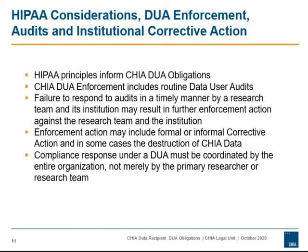Such action may include, but is not limited to, requests for additional protective measures, requests for formal corrective action plans and/or root cause analyses, and in some instances, the destruction of CHIA data and prohibition of further use or release. When violations of the CHIA data use agreement are known or suspected, CHIA may involve the institution's research administration or executive personnel. As CHIA releases data to and maintains its data use agreement with the institution, it seeks compliance by the entire institution and not merely with specific research teams or individuals.